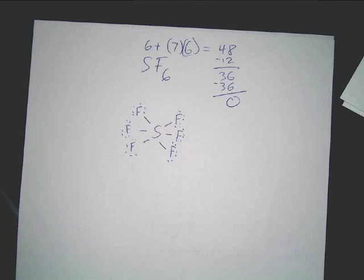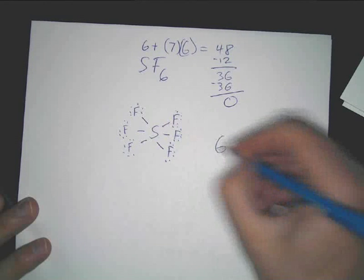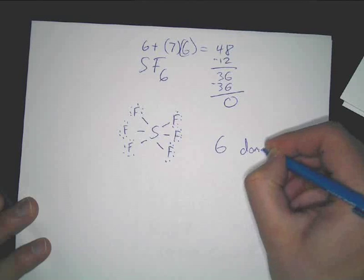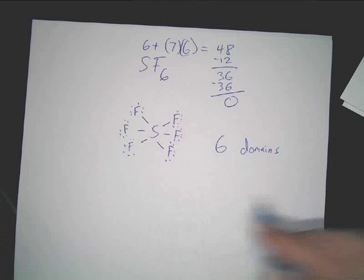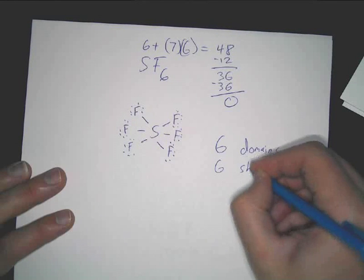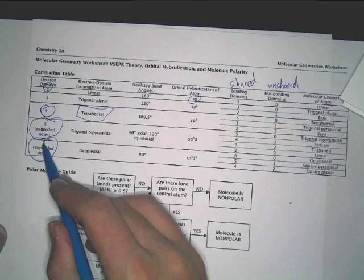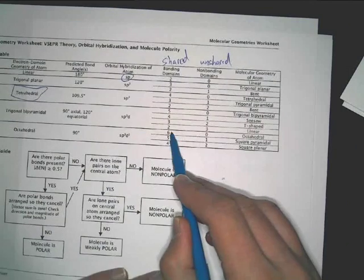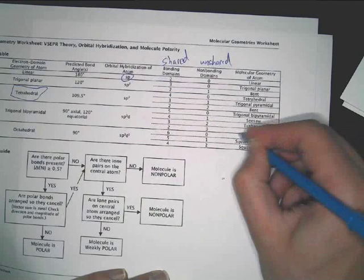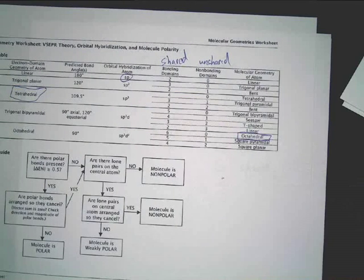Now, how many electron domains are around that one? You can count, there's six domains. Are they all shared pairs? They're all six shared, so if you look at your little chart here, six domains, six are shared, zero are unshared. It is what we would call an octahedral molecule. Now, that one's not too bad.